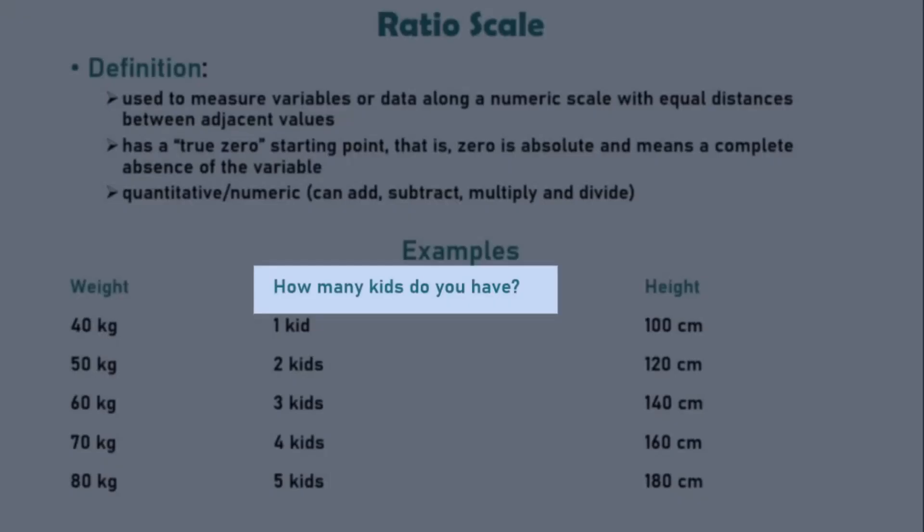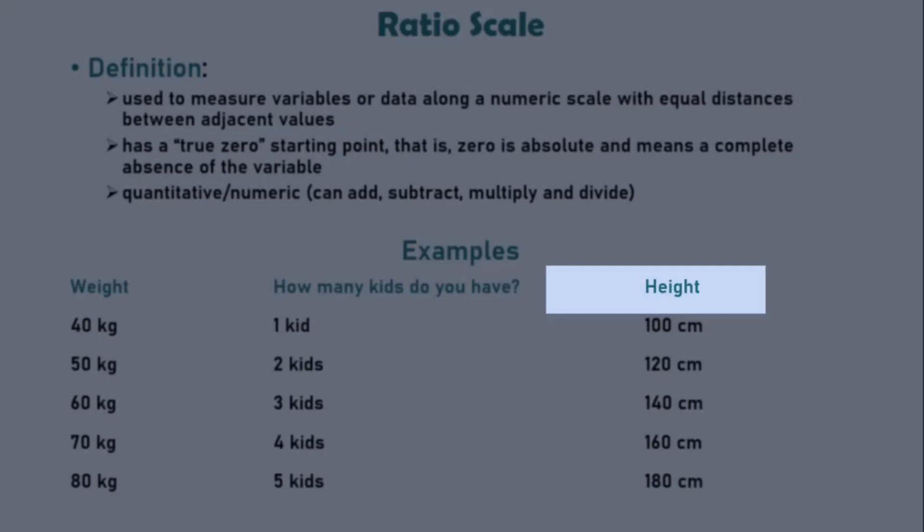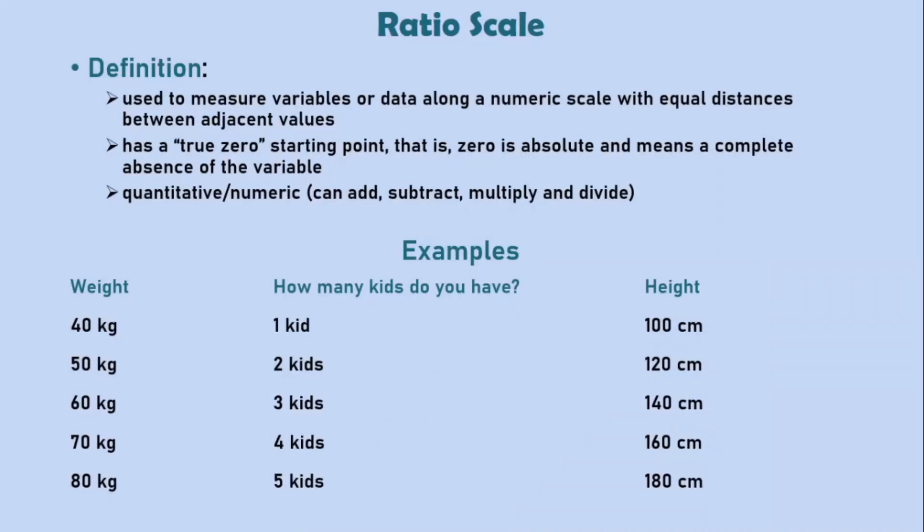Let's look at other examples. When you are asked how many kids do you have, a person who responds with zero would mean that the person has no kids at all. The variable which is being measured, which is the number of kids, is absent. Also, let's look at height. No matter how short a person is, he or she can never have a negative height. I mean, what would that even imply?